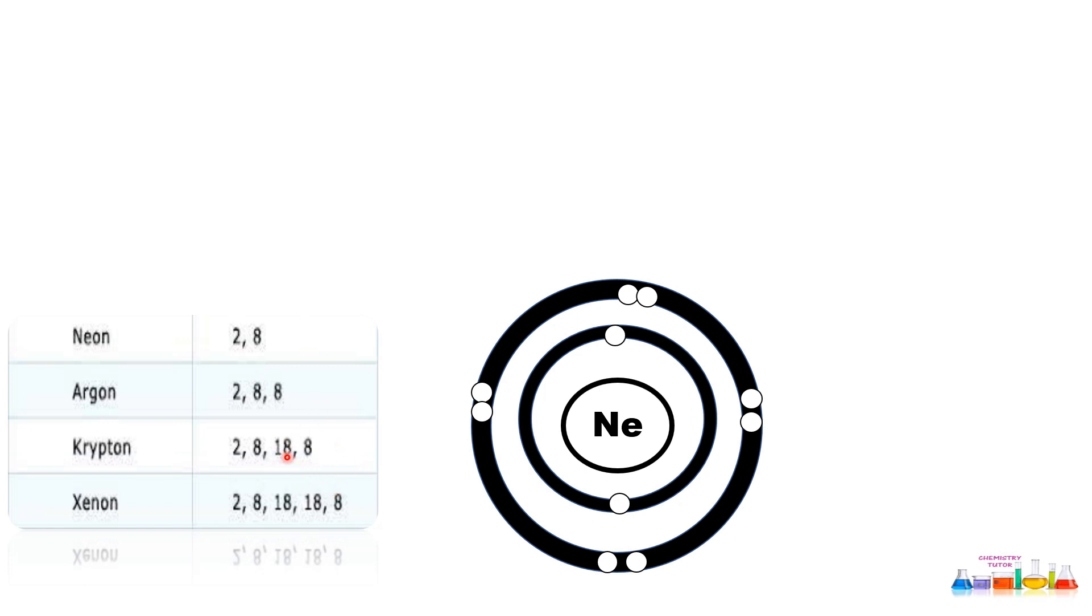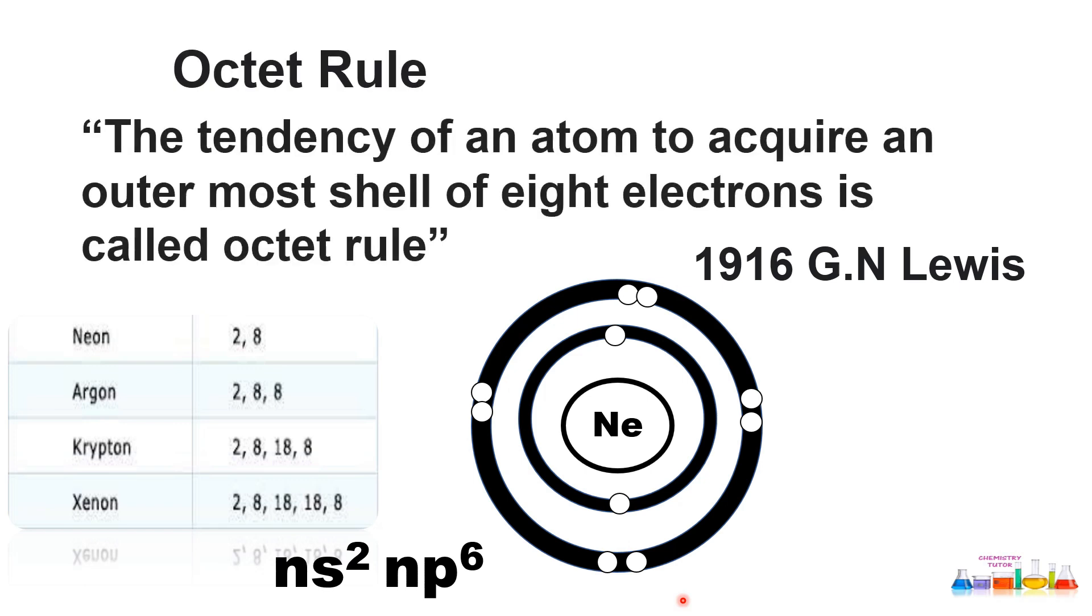In 1916, G.L. Lewis, a chemist, used this concept to explain why atoms undergo chemical reactions. He called his explanation the octet rule - a set of eight, ns² np⁶. He said the tendency of an atom to acquire an outer shell of eight electrons is called the octet rule.